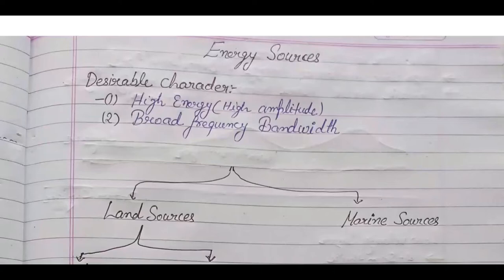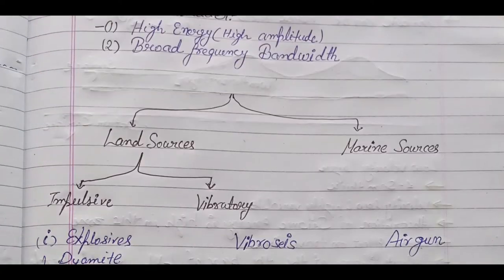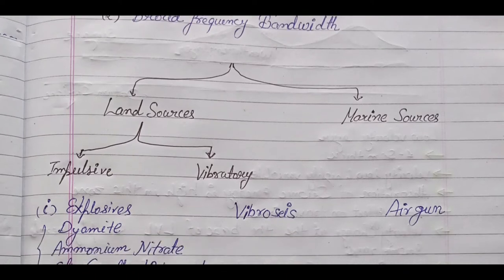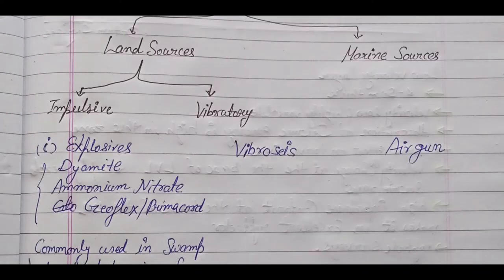There are two types of sources: land sources and marine sources. In land sources there are impulsive and vibratory sources. Under impulsive there are explosive sources, and under vibratory there is Vibroseis. When we talk about explosive sources, there is dynamite, ammonium nitrate, geoflex, and Sigma chord — all of these are explosive sources.